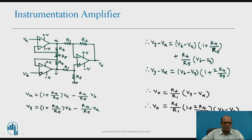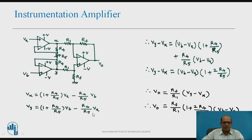Similarly, voltage at point Y: when phi B is acting and phi A is grounded, the lower amplifier acts as a non-inverting amplifier with input phi B, giving (1 + R4/R5) × phi B. When phi A is acting alone and phi B is grounded, it acts as an inverting amplifier with gain −R4/R5, giving −(R4/R5) × phi A. This gives the final equation for phi Y.